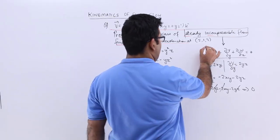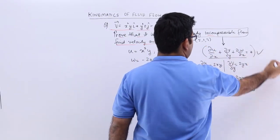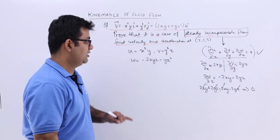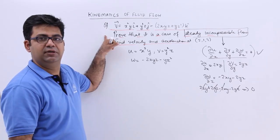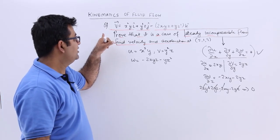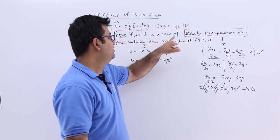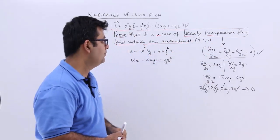This means this equation is satisfied. So we can say that this velocity function is describing a flow which is steady and incompressible.